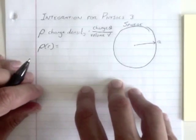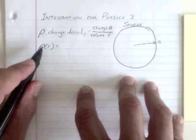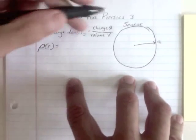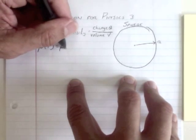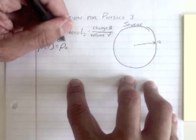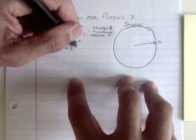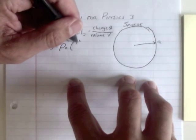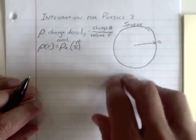The charge density is a function of the distance from the center, and it's this charge density, rho naught, it's just some constant, times R squared over A squared, or R over A quantity squared.